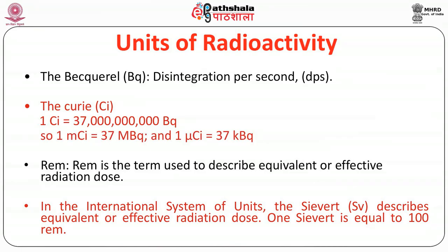We should know the units of radioactivity. The becquerel is the unit of radioactivity, defined as one disintegration per second. One curie is 3.7 × 10⁹ becquerels; one millicurie is 37 megabecquerels; one microcurie is 37 kilobecquerels. The second important unit is REM — Roentgen Equivalent Man — used to describe equivalent or effective radiation dose. In SI units, the sievert is the unit of dose; one sievert equals 100 REM, and one gray equals 100 rads.